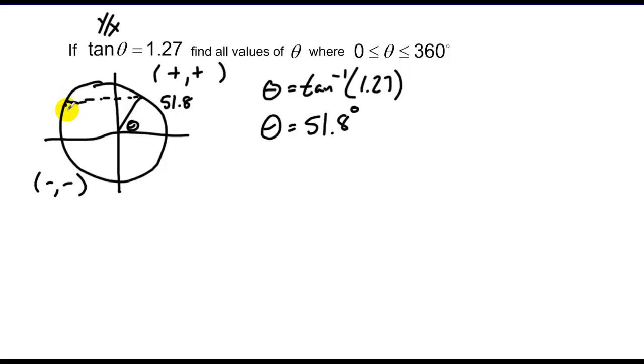So I have to actually flip over two axes and come up with my reference in the third quadrant. And that reference is 51.8 degrees from 180. So if I take and add those I get a total of 231.8 degrees. So there's my two values.